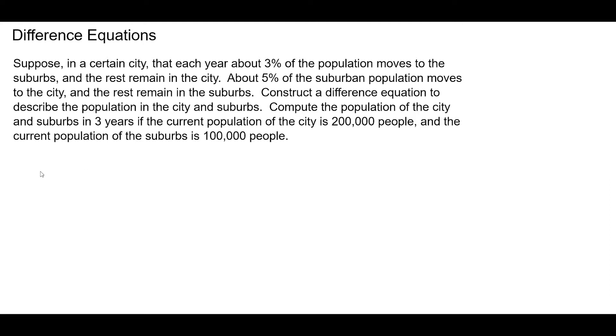So let's say X sub zero is the initial population in the city and the suburbs. So in the city, the initial population is 200,000 and the suburbs, it's 100,000.